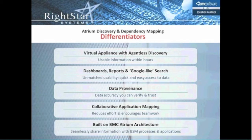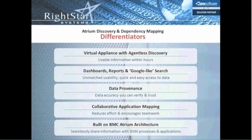The third differentiator is what we call data provenance — data accuracy you can verify and trust. When we do our discoveries and return something saying this is a Server 2008 box with a certain service pack running this software, you might ask how we got that information. We have the ability with provenance to show you the queries or the scripts we ran against that device to return that information. It's real time — here's what we ran so you can see what's being returned.